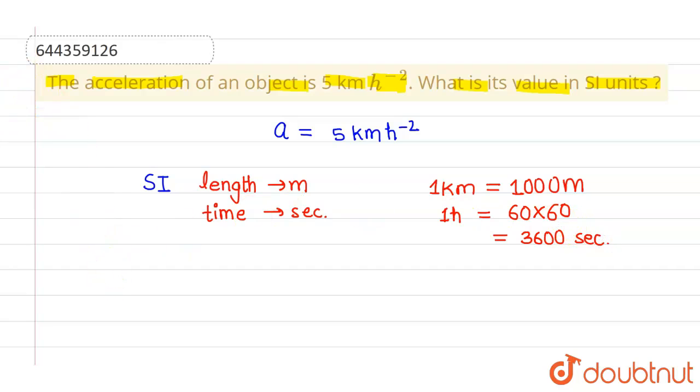Now, if we change this given acceleration which is given as 5 km per hour square, this will be a equals to 5. Since km can be written as 1000 meters, so this will be 1000 meters divided by 1 hour can be written as 3600 seconds, so this will be 3600 seconds whole square.